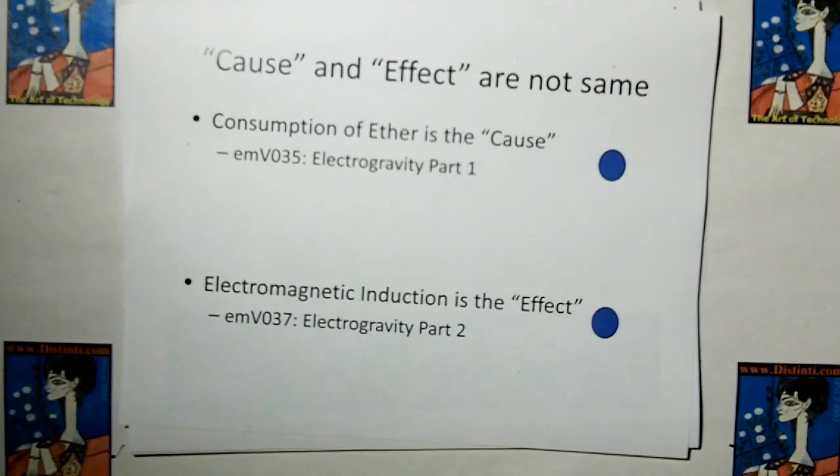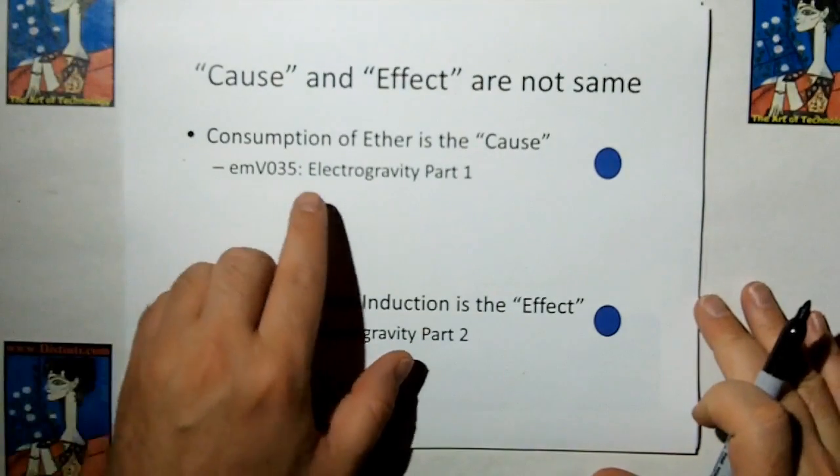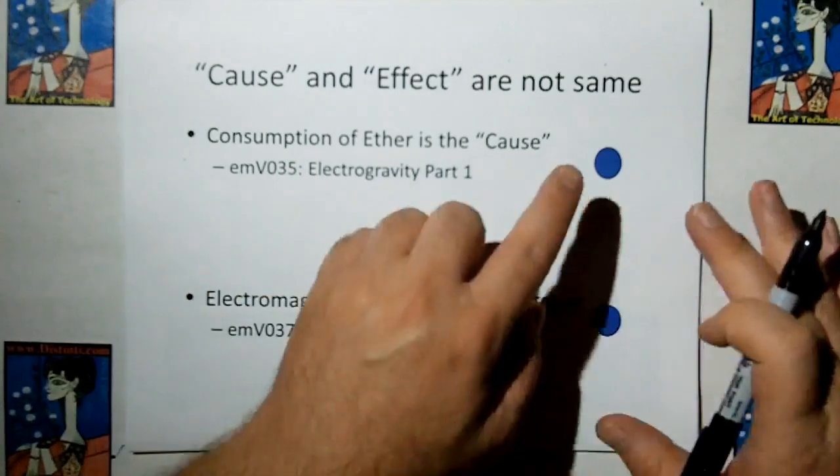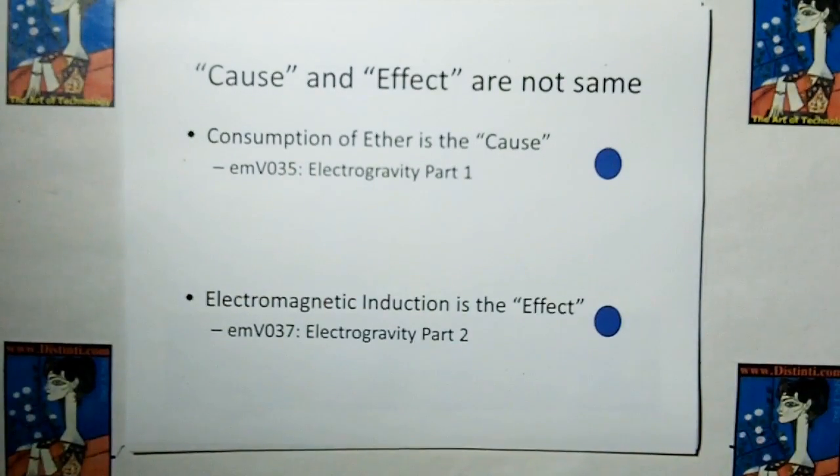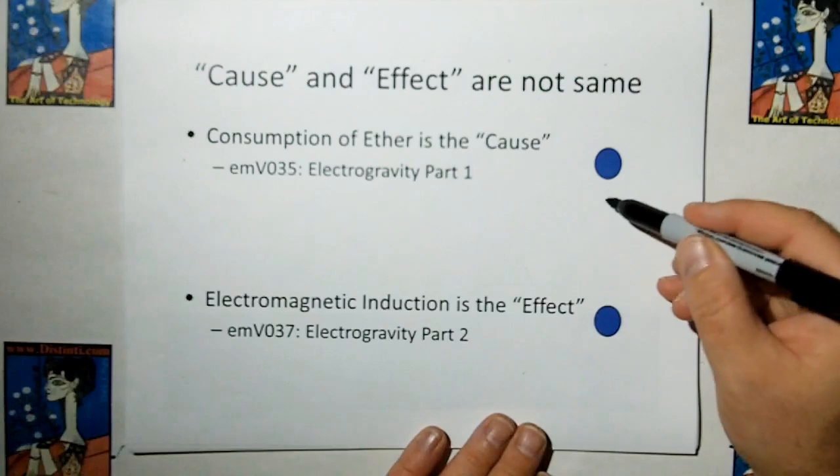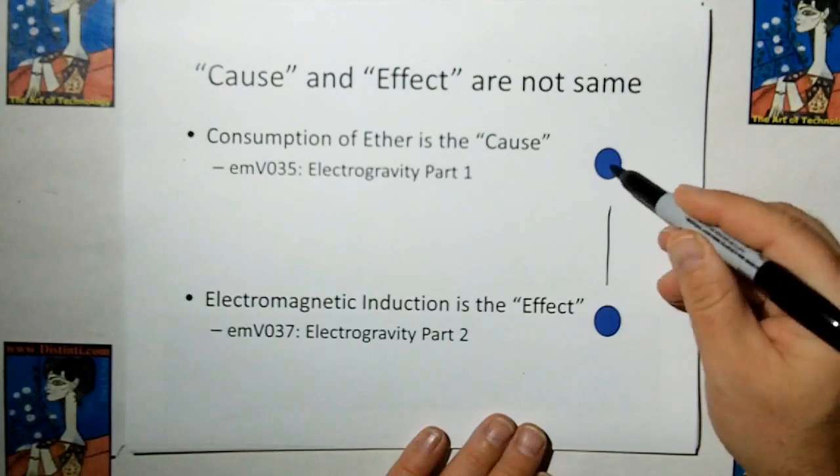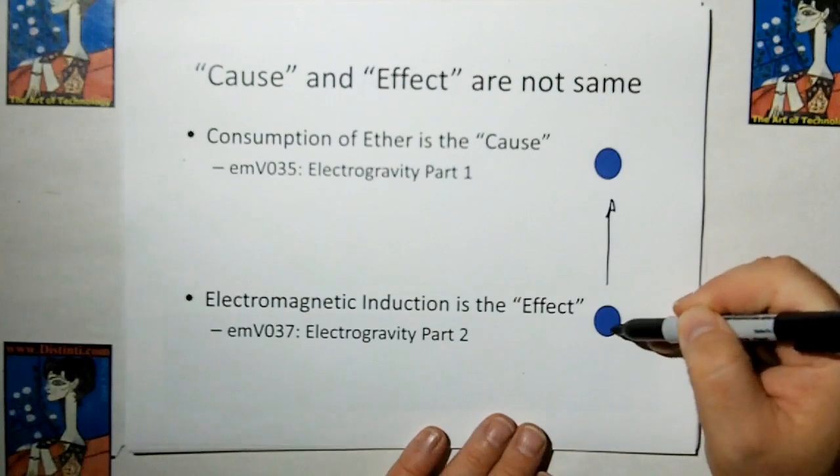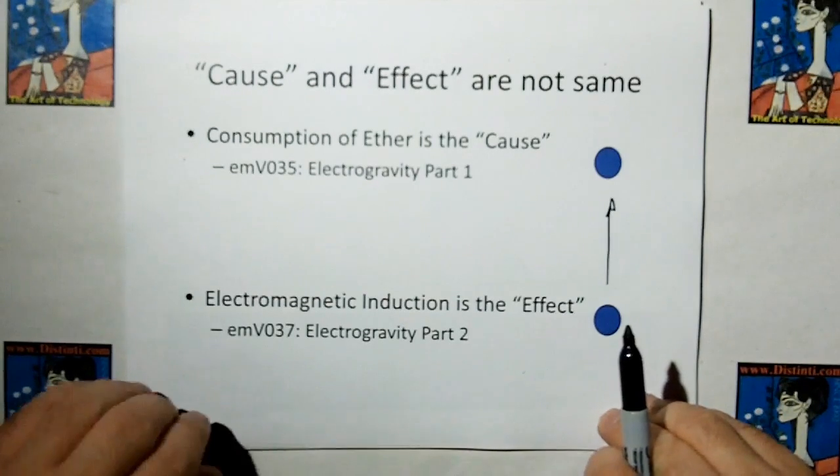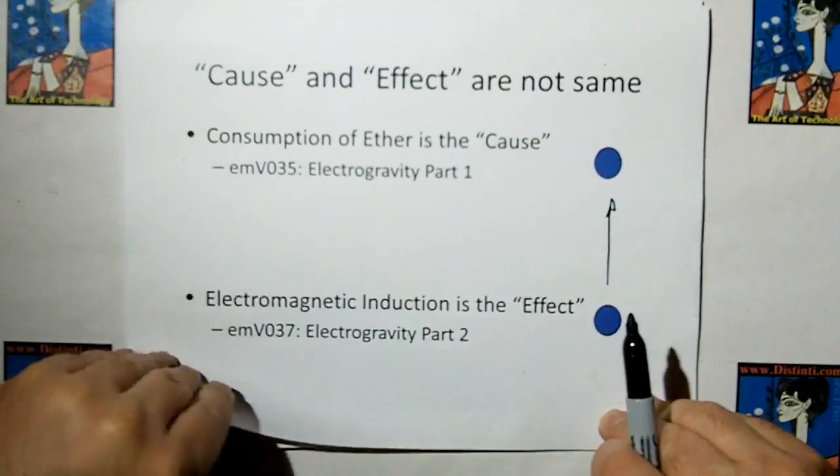So what would we say about gravity? We said that the cause of gravity is the consumption of ether by the first object. And what we're going to show in part two, which is the next video, is that the effect of that ether being consumed by this object up here couples to the target through electromagnetic induction. That's going to be in EMV-037, which is electrogravity part two.